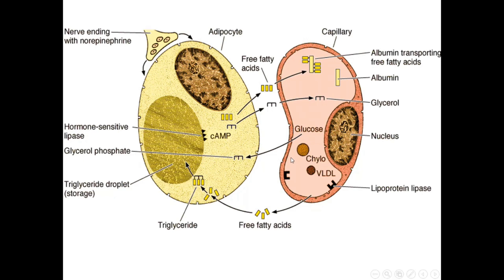When lipids as chylomicrons and VLDL arrive in the capillary of the adipose tissue, these lipids are hydrolyzed by an enzyme inside the capillary called lipoprotein lipase. The lipids are broken down to fatty acids, which easily cross and pass through the fat cells. The fat cells then take these fatty acids and join them with glycerol — adipocytes take glucose from the blood, convert it to glycerol, and one glycerol with three fatty acids produces a triglyceride stored inside the cell.